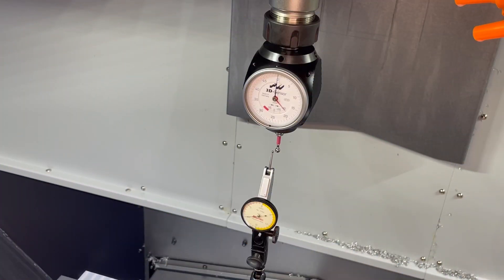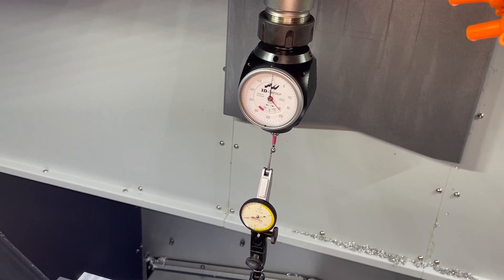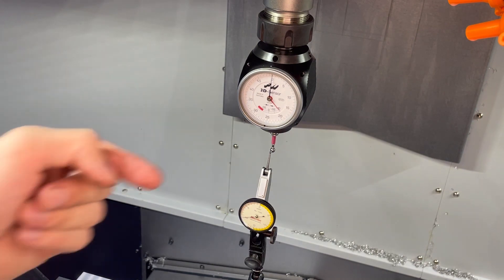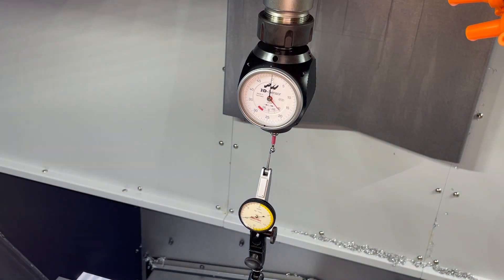As you can see here we are in hand jog mode on the machine. What we need to do here is we actually need to in the X direction, which is left to right, and the Z direction, which is up and down, find the center line of the ball according to this test indicator.